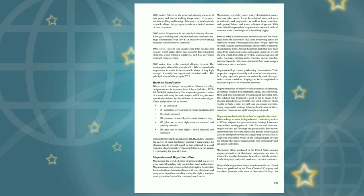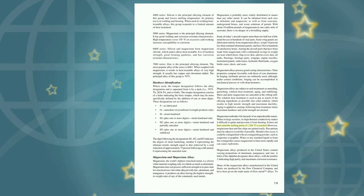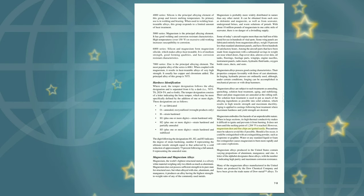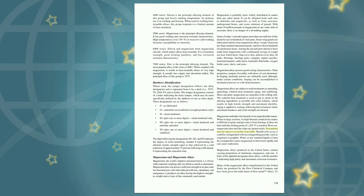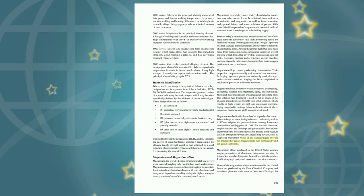Magnesium embodies fire hazards of an unpredictable nature. When in large sections, its high thermal conductivity makes it difficult to ignite and prevents it from burning; it does not burn until the melting point of 1,204 degrees Fahrenheit is reached. However, magnesium dust and fine chips are ignited easily. Should a fire occur, it can be extinguished with an extinguishing powder such as soapstone or graphite. Water or any standard liquid or foam fire extinguisher causes magnesium to burn more rapidly and can cause explosions.